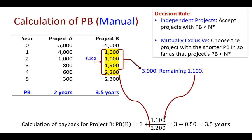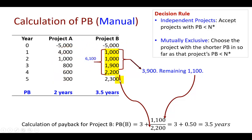Without further ado, here's a quick example. We have two projects, A and B, and these are five-year projects. Both projects will cost $5,000. For A, we expect to earn these cash flows over the next five years, and these are going to be the cash flows for B.